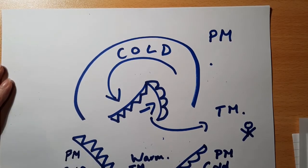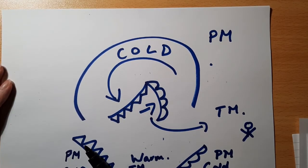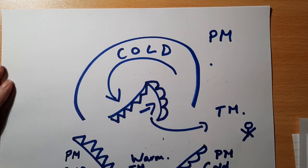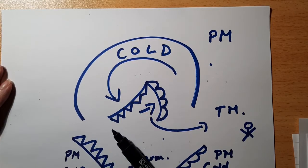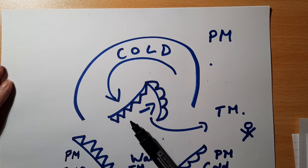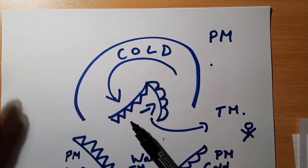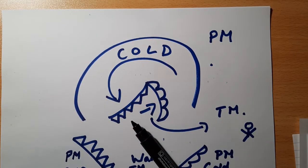As a depression develops, the cold front moves faster than the warm front. So over time the cold front starts to catch up with the warm front and get closer and closer.